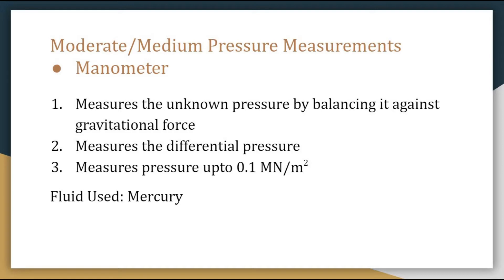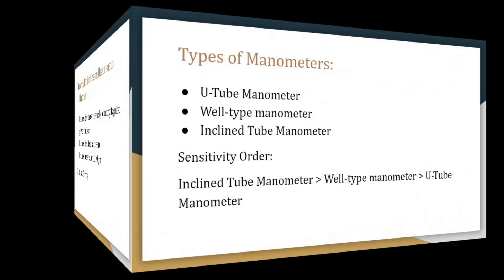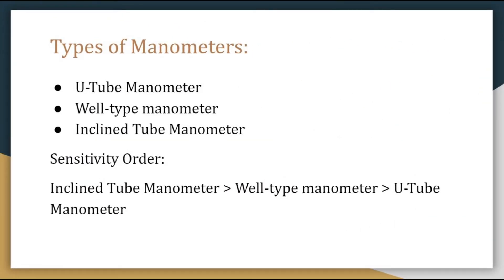The fluid kept inside a manometer needs to have low viscosity, low thermal coefficient of expansion, it should be non-corrosive and non-sticky, it should have low surface tension and low vapor pressure as well. An example of such a fluid is mercury. Mercury is widely used as a manometric fluid because of its wide temperature operating range from minus 20 degrees C to 350 degrees C, and it meets all the criteria for being a manometric fluid.